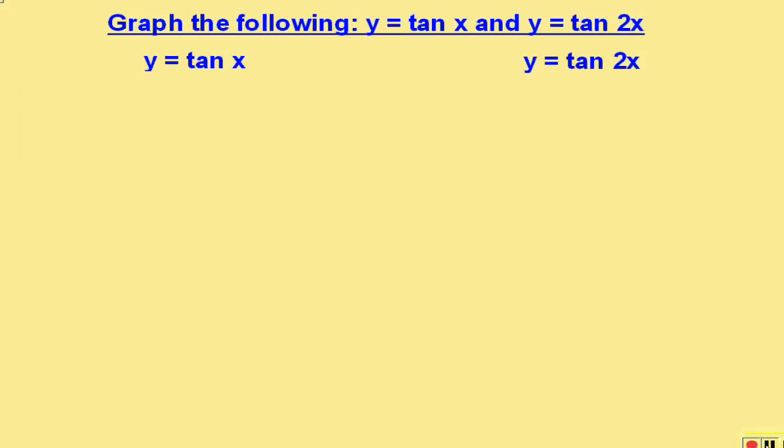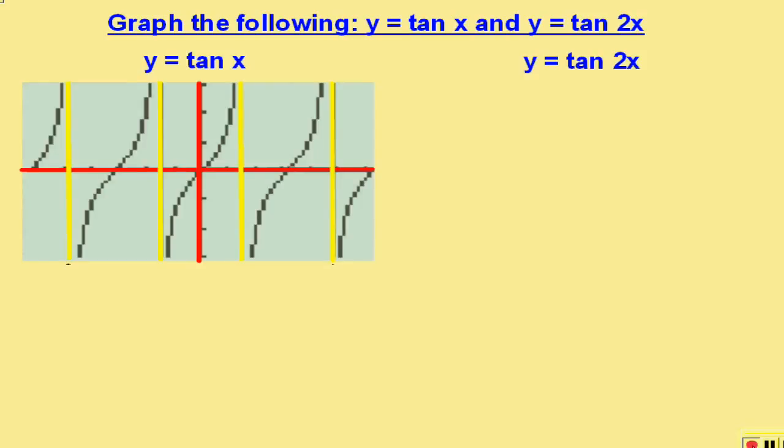In our first graph, when we graph the tangent curve on a calculator, we will notice that there are a lot of asymptotes. The reason the asymptotes are there is because tangent is sine over cosine, and whenever cosine is zero, we have a denominator in a fraction that is zero, which means the fraction is undefined.